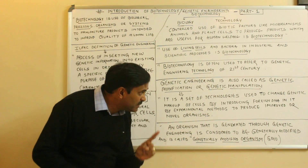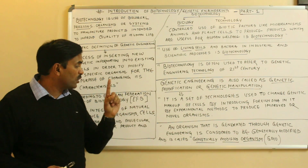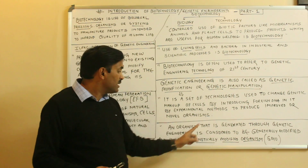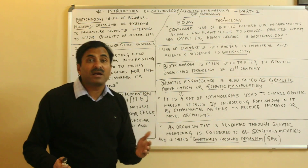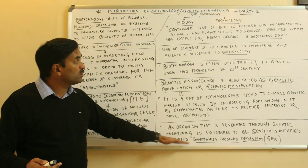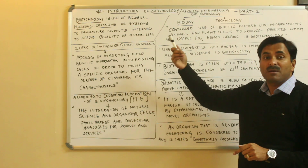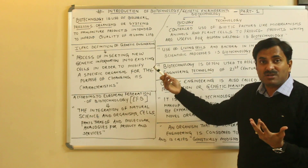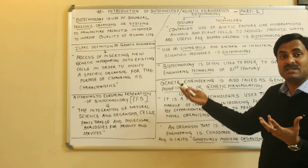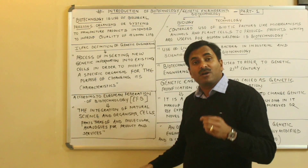An organism that is generated through genetic engineering is considered to be genetically modified and is called a GMO, or genetically modified organism. So dear students, these are the various definitions indicating biotechnology and genetic engineering. You can use any of these definitions to define biotechnology — whichever you find easiest.